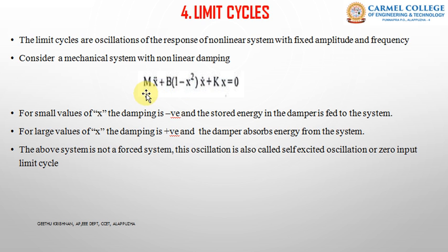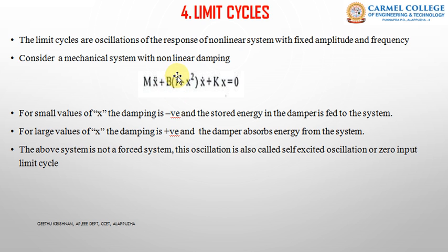But here the equation is m·ẍ + b(1 - x²)·ẋ + kx = 0, which is called the Van der Pol equation. Here the dashpot is nonlinear. For small values of x, the damping is negative, and the stored energy in the damper is fed back to the system. For large values of x, the damping is positive, and the damper absorbs energy from the system. From the equation, it is clear the system is not excited by any input — limit cycles have self-sustained oscillations.